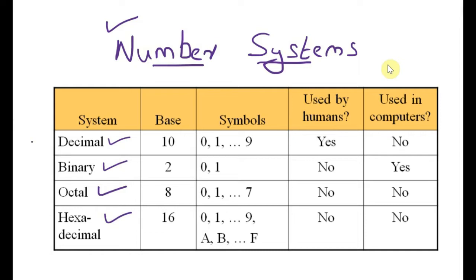We will go to the decimal number system first. In the decimal number system, as you can see, the total number of symbols ranges from 0 to 9. That means the decimal number system consists of symbols 0, 1, 2, 3, 4, 5, 6, 7, 8, and 9. All decimal numbers are formed by using the combination of these 10 symbols. Since there are 10 symbols, the base is 10. The number of symbols is called the base.